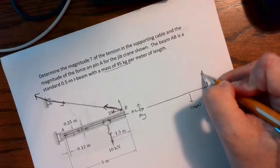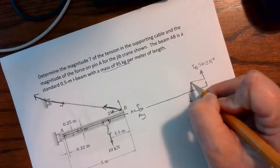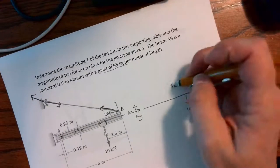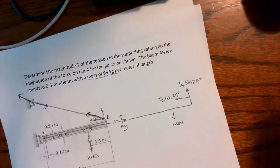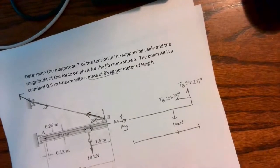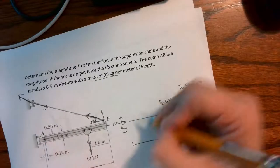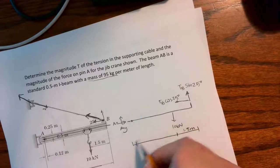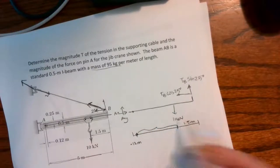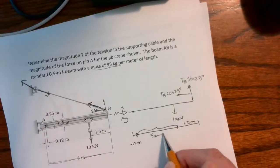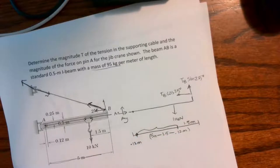Because it's a two-force member I can break down the components of this tension cable. I can call the Y component tension in my cable at B sine 25 degrees, and the X component tension at B cosine 25. The whole beam is 5 meters long but my pin at A is offset at 0.12 meters. The distance from A to where we have the 10 kilonewtons hanging is 5 meters minus 1.5 minus 0.12 meters.